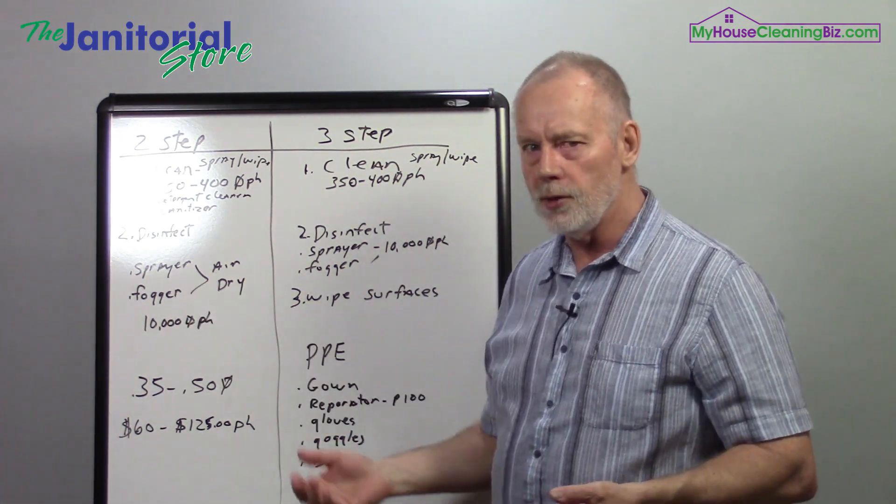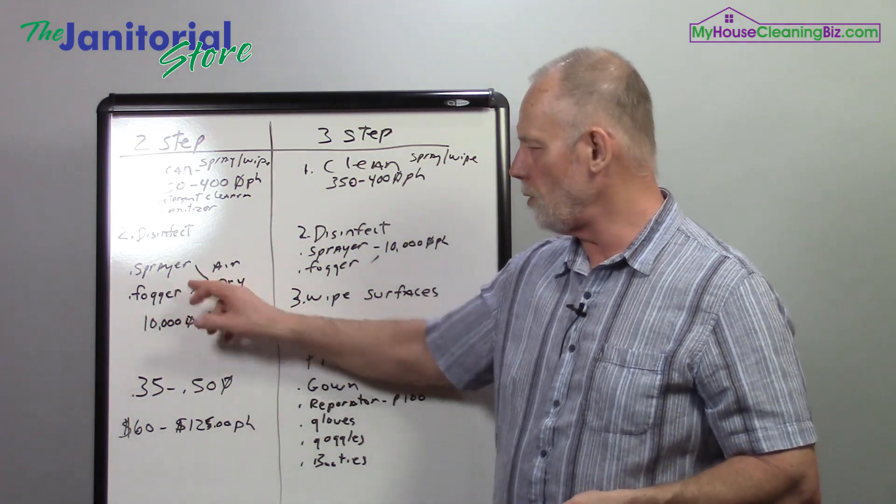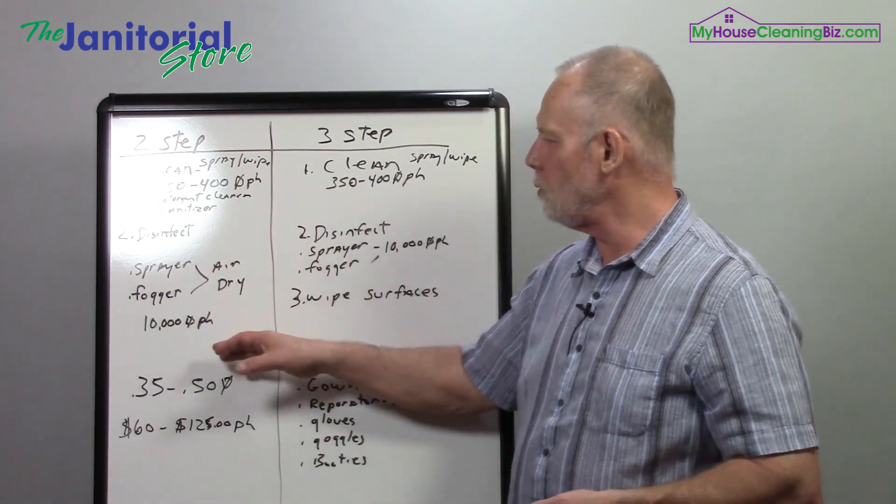With that process, you can get about 10,000 square feet per hour. So your whole disinfecting is a fast process. So that would be a two-step process.